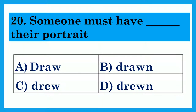Someone must have dashed their portrait. Option A: Draw. Option B: Drawn. Option C: Drew. Option D: Drew. The answer is Option B: Drawn — Someone must have drawn their portrait.